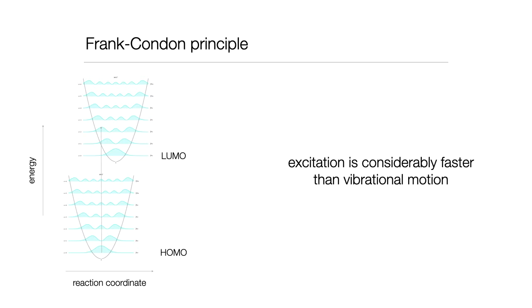whereas excitation tends to happen on the femtosecond timescale, so at least a thousand times faster. So it's essentially seeing a molecule which is fixed in position as it does so. And because of that, the transition that we see, that we sketch on this diagram, is a vertical transition.